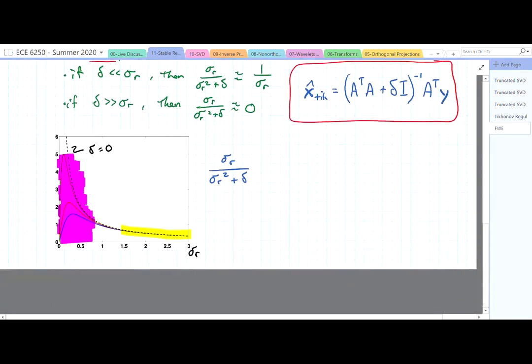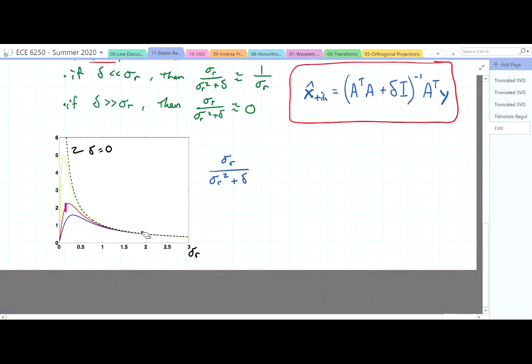So if we look down here at this plot, this black line is the least squares solution. Basically, this is when delta is equal to 0. And what we're plotting is the expression sigma_r over sigma_r squared plus delta as a function of sigma_r. And of course, if delta is 0, this comes out to be just 1 over sigma_r, which goes to infinity as sigma_r goes to 0.